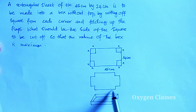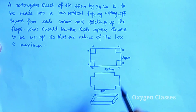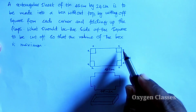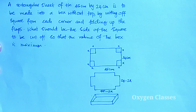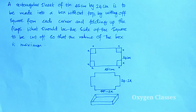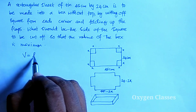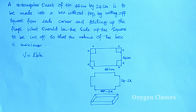The total length of the sheet is 45 cm. After cutting x from each end, the length of the box becomes 45 minus 2x. The volume equals length into breadth into height. The height of the box will be x centimeters.